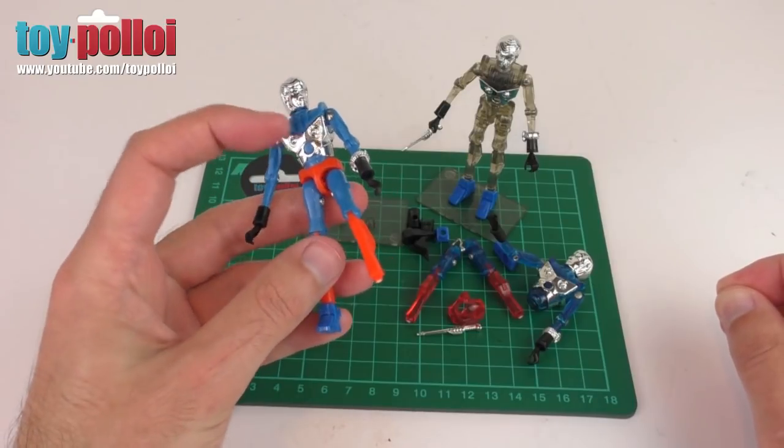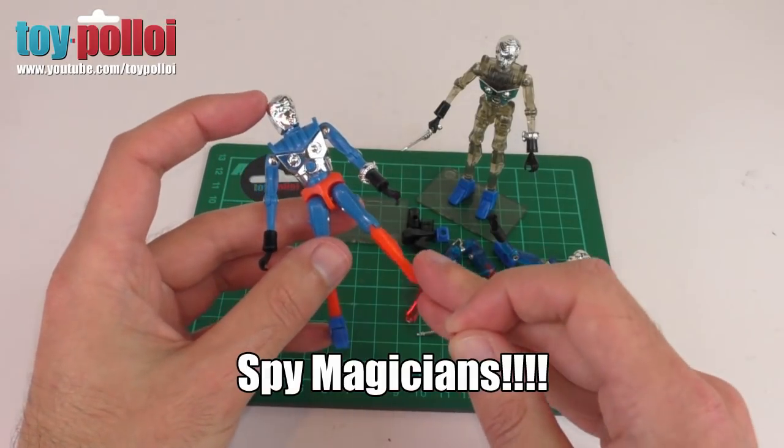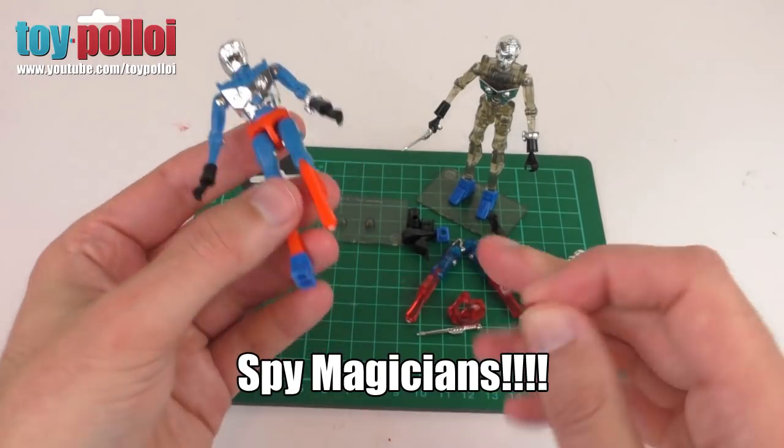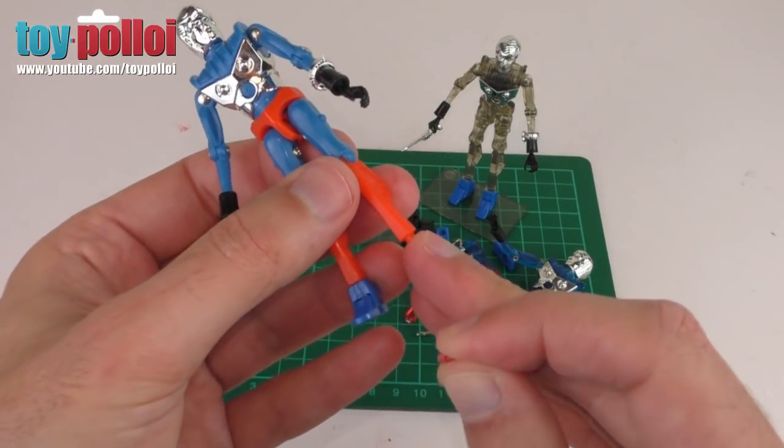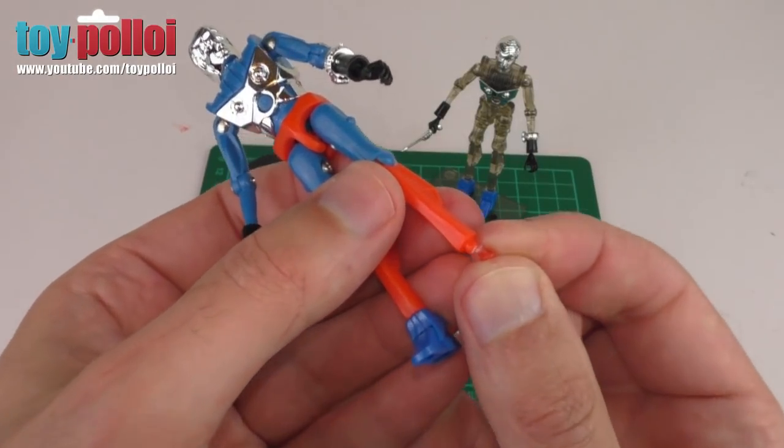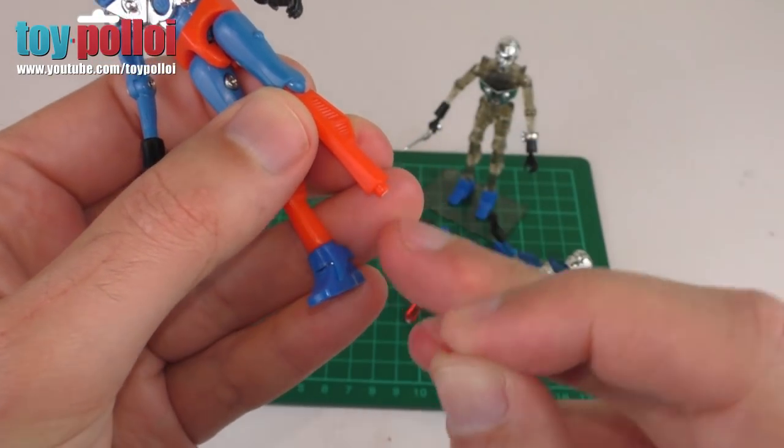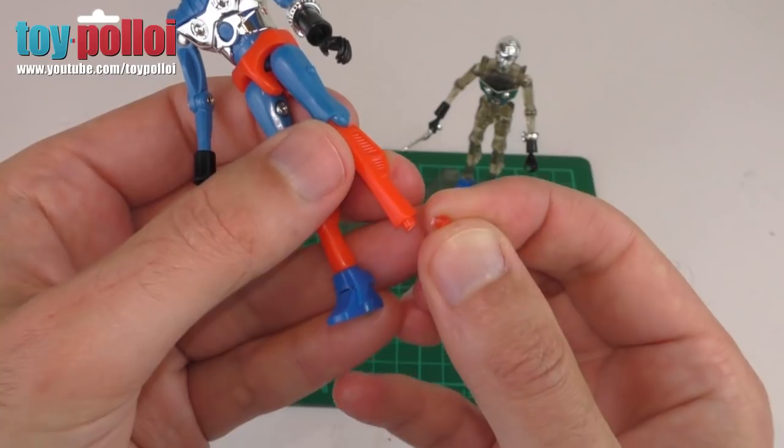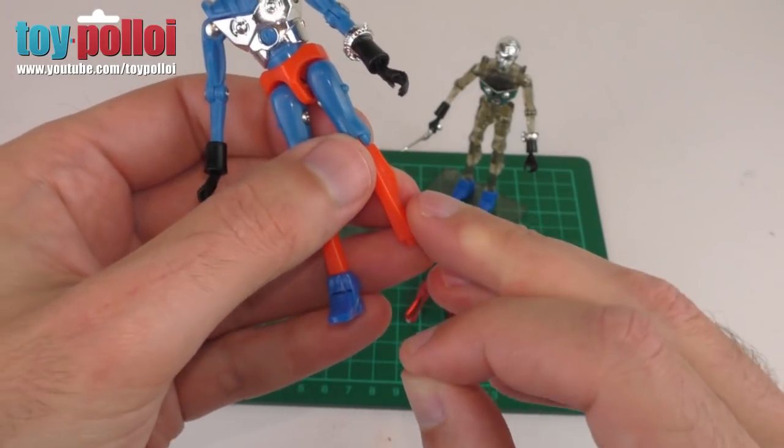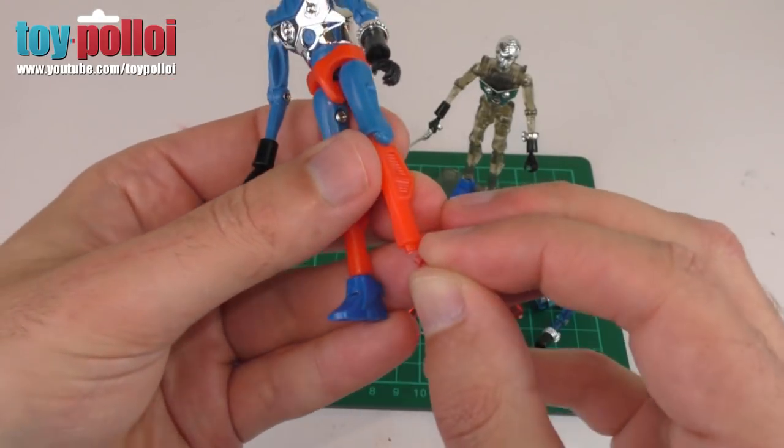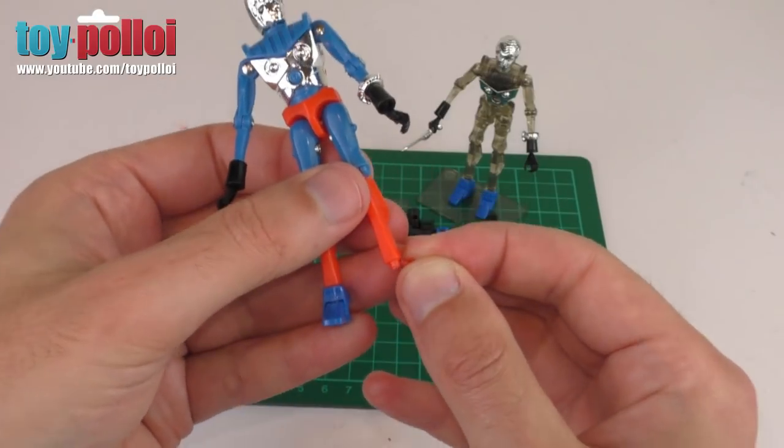These little Microman spy changers have the same issues that other Microman and Micronauts figures have, and that is the little peg that holds the foot on snaps off. Without that, the foot is not able to be put back on the figure. I've shown how to fix this before in a recent video on fixing time traveler legs. I'm going to use the same technique.